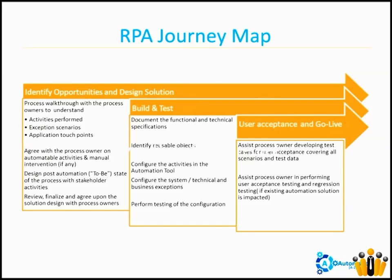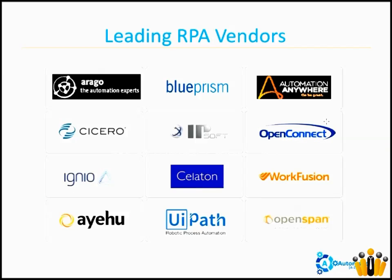Once we are done with the four weeks of warranty support, it will go for handover to the business process team — they will take care of the automation going forward. When it comes to RPA tools, we have more than 20 tools in the industry. Among those, organizations are using Blue Prism, Automation Anywhere, UI Path, and OpenSpan. The top two places go to Automation Anywhere and Blue Prism, with UI Path in the next place.